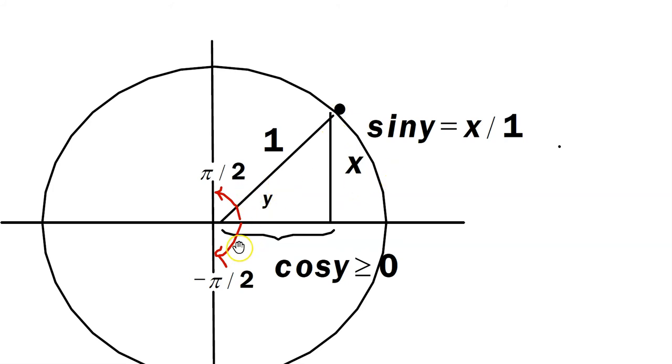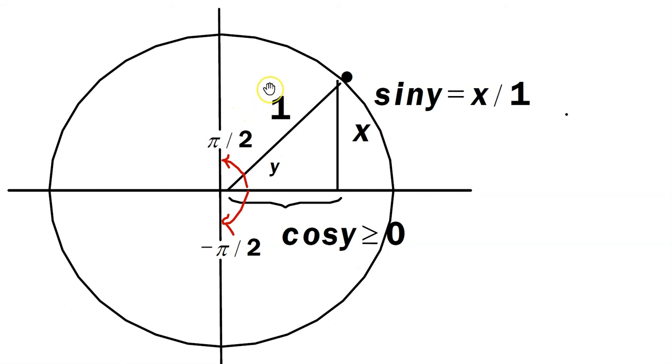Now the sine inverse function, when it does operate, it returns values between negative pi over 2 and positive. So when you are in this quadrant here or the fourth quadrant here, then the cosine of y is always greater than or equal to 0. Because cosine of y is just the horizontal leg of the triangle here.